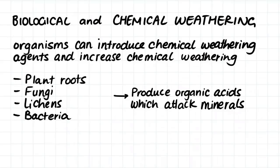Finally, we'll talk about biological weathering and how biological weathering and chemical weathering work together. Biological weathering is when organisms introduce chemical weathering agents. These introduced chemical weathering agents can increase chemical weathering. The organisms that are known to introduce biological chemical weathering agents are plant roots, fungi, lichen, and bacteria. All of these organisms introduce organic acids, which then attack minerals in processes of chemical weathering.